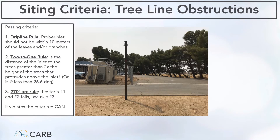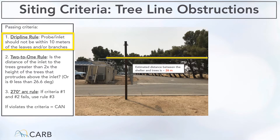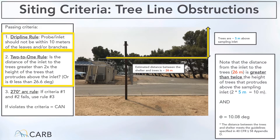Here's an example of our Mojave site, where we moved from one location to a temporary location. Essentially the Mojave site is surrounded by trees, and we want to determine if the inlets are clear from obstruction. Number one, the drip line rule states that the probe or inlet should not be within 10 meters of the tree branches. In our case, it is well over 10 meters — about 26 meters — so the first rule checks out. The two-to-one rule asks whether the inlet's distance to the trees is 26 meters, which is greater than two times the height the trees are above the inlet — two times five meters, equating to 10 meters. Since 26 meters is greater than 10 meters, we passed this rule and it checks out.